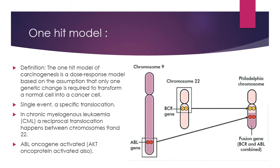The one-hit model of carcinogenesis is a dose-response model based on the assumption that only one genetic change is required to transform a normal cell into a cancer cell — a single event — where a specific translocation happens between two alleles or a particular gene sequence.